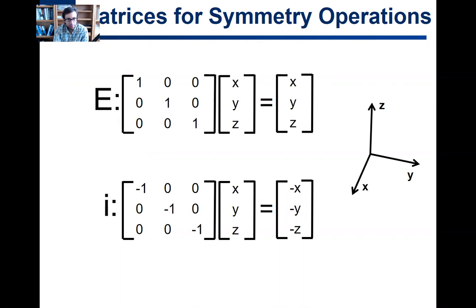So consider, for example, the identity symmetry operation. We know that the identity symmetry operation does nothing. It just takes a molecule, every molecule has identity, and it just is itself. It's a symmetry of itself. So mathematically, what is that doing?